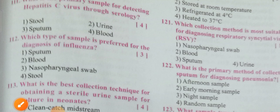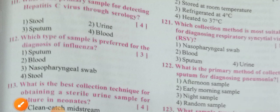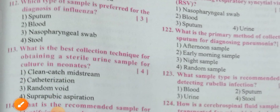Which type of sample is preferred for the diagnosis of influenza? Options: sputum, blood, nasopharyngeal swab, stool. Since it is related to throat and nose, we have to take the sample from the nasopharyngeal swab only — option 3 is the correct answer. What is the best collection technique for obtaining a sterile urine sample for culture? Options: clean catch midstream and suprapubic aspiration. Option 4 is correct: suprapubic aspiration.